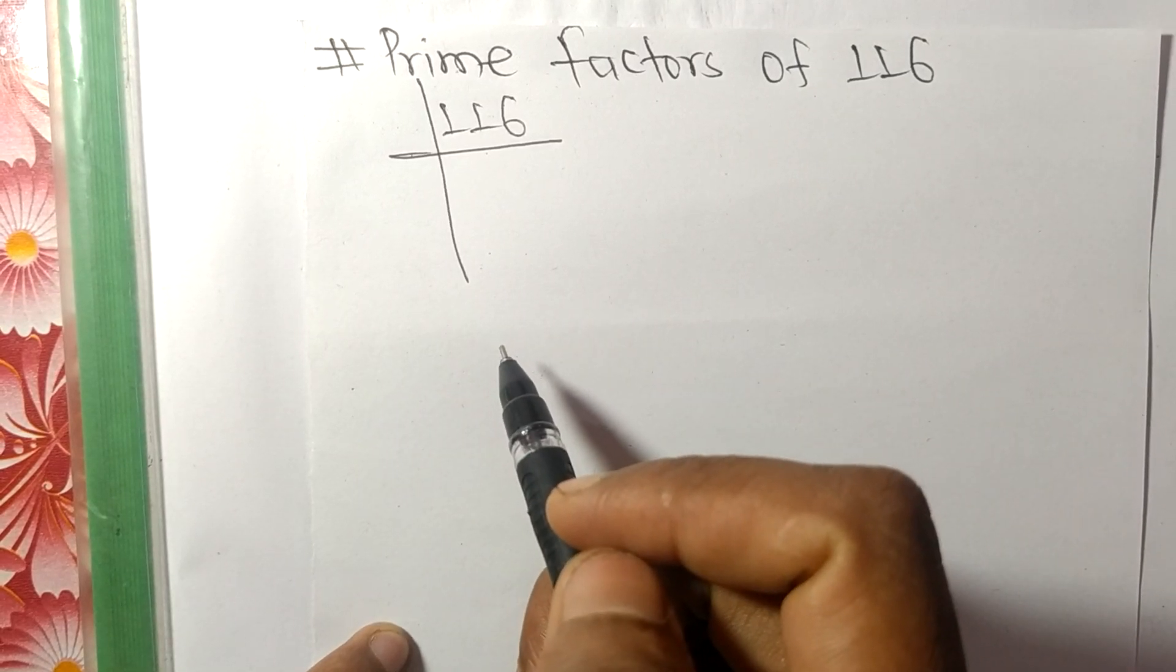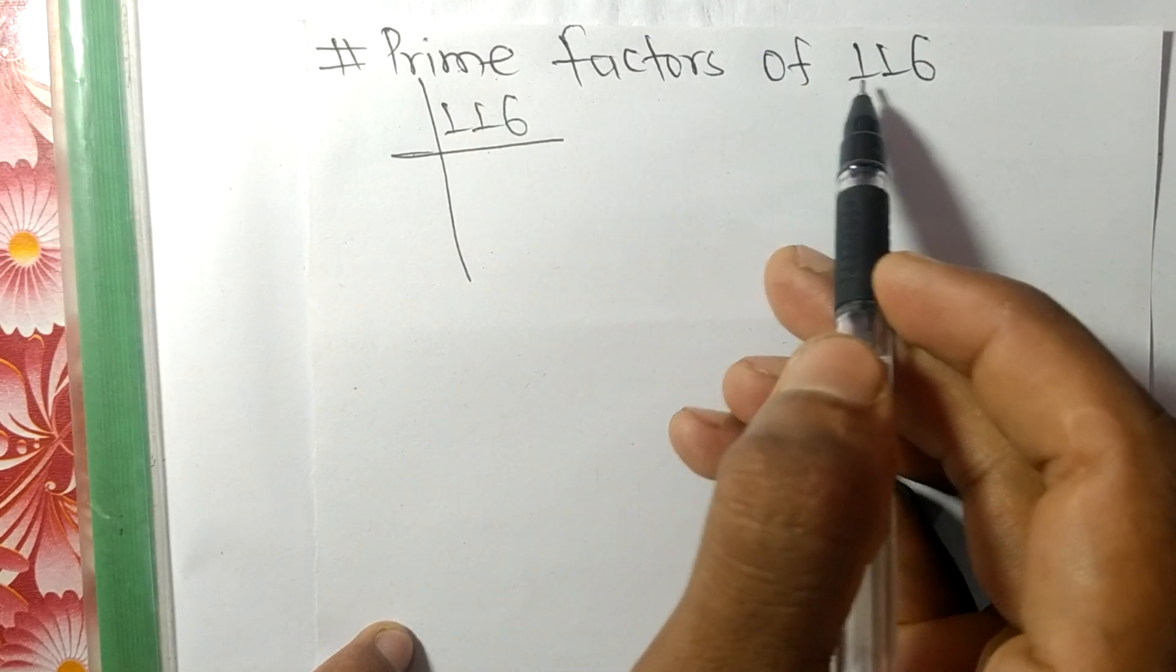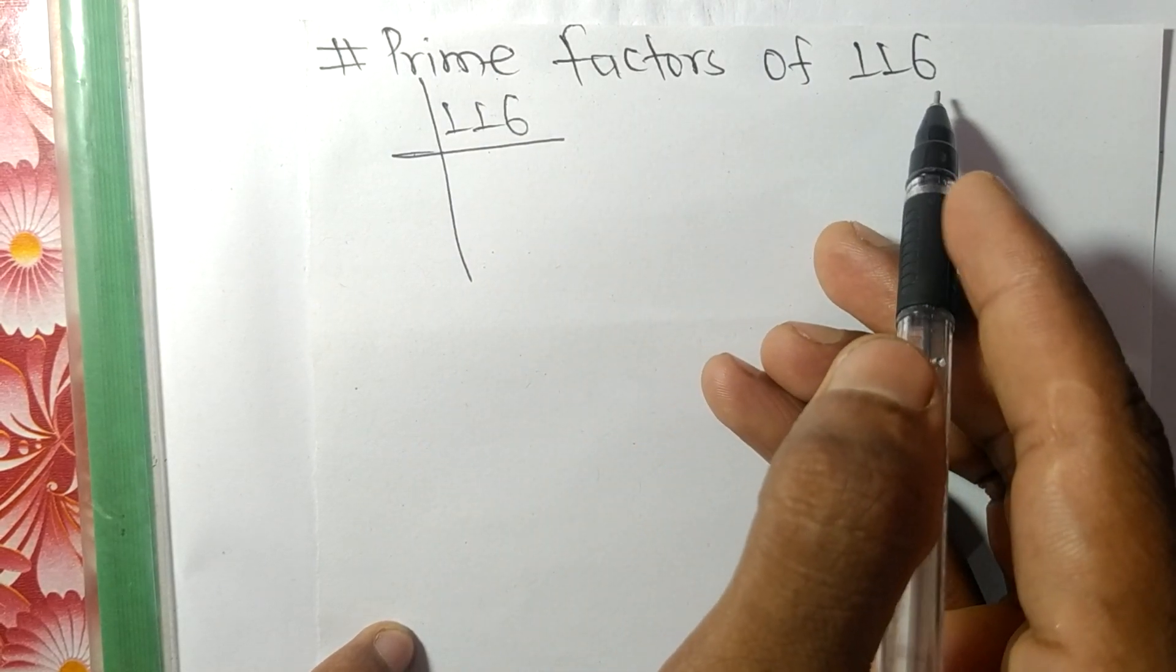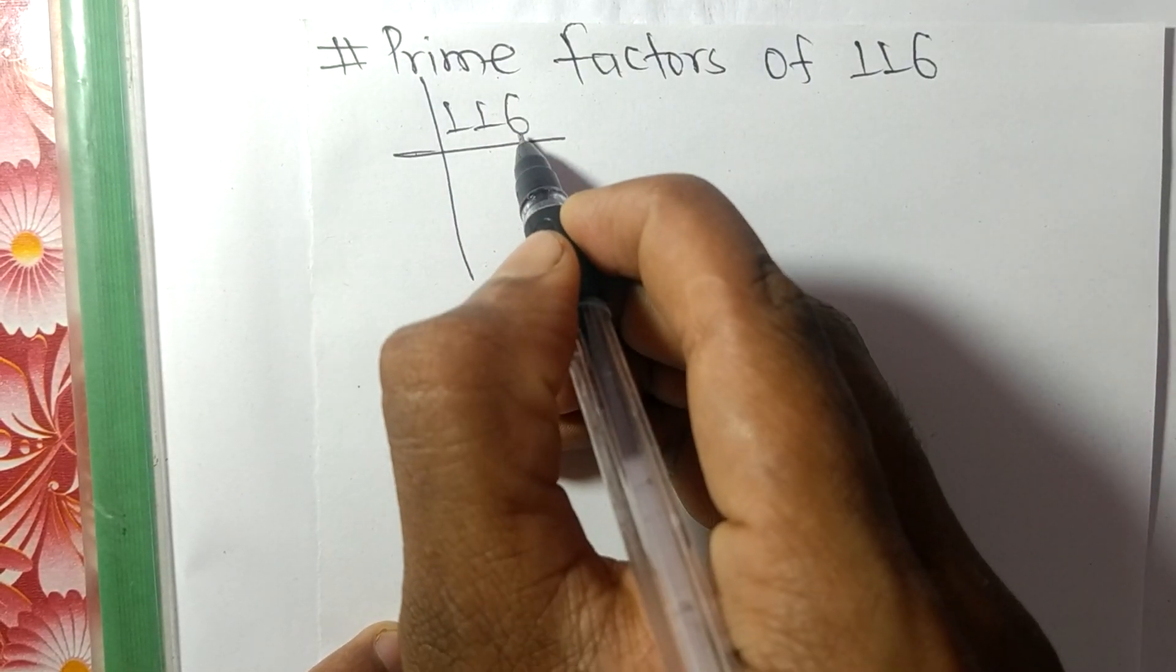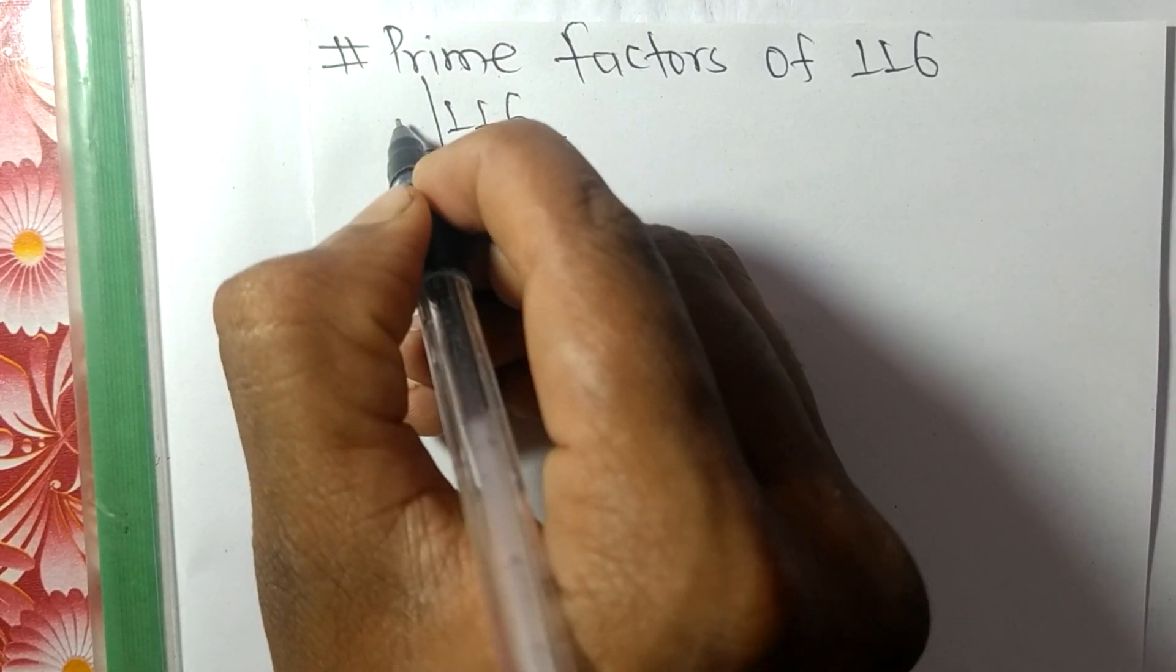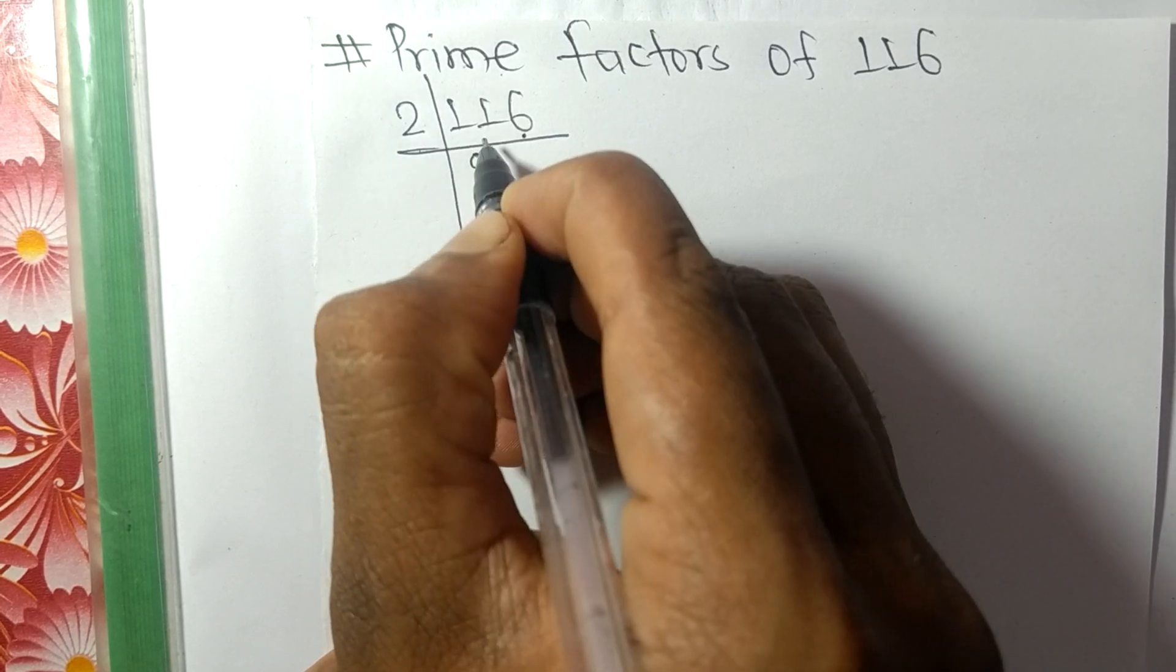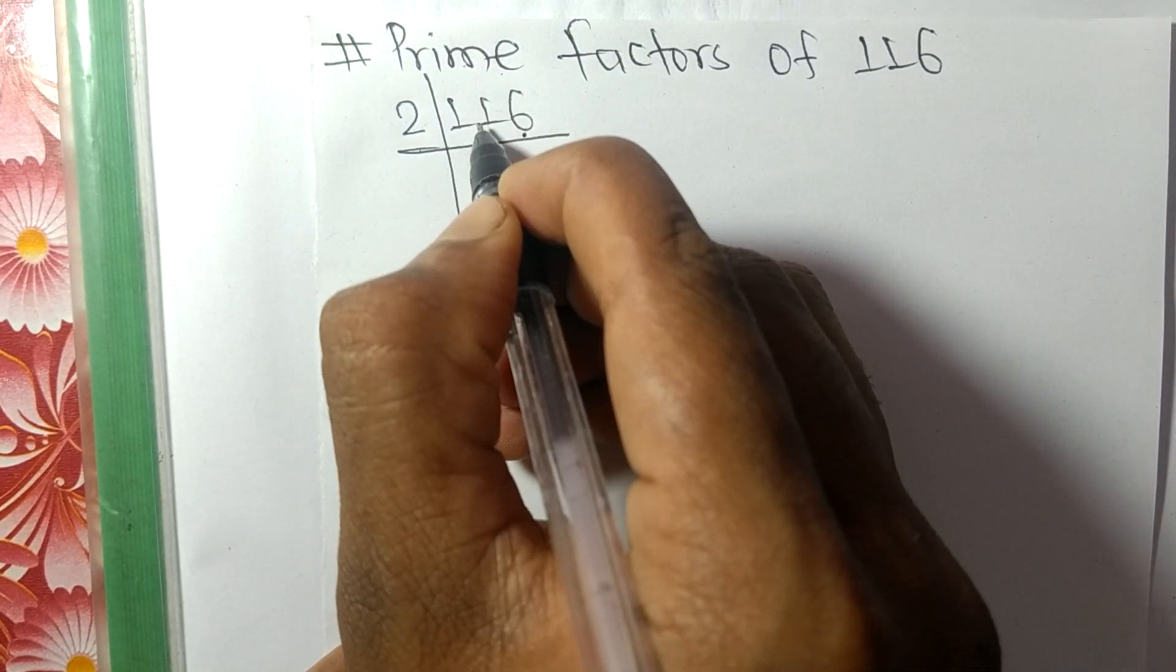Today in this video, we shall learn to find the prime factors of 116. It contains an even number 6, so the whole number is divisible by 2. 2 times 5 is 10, remainder 1.